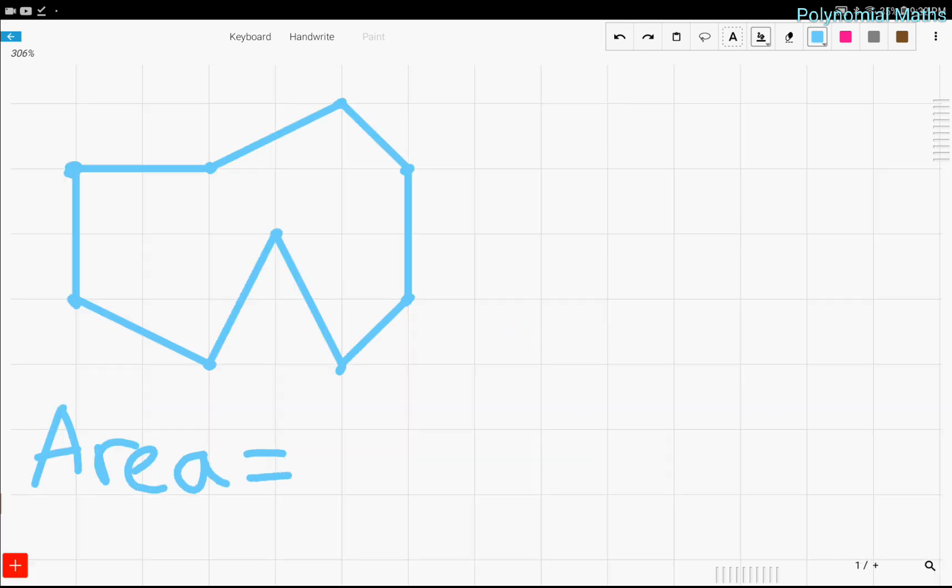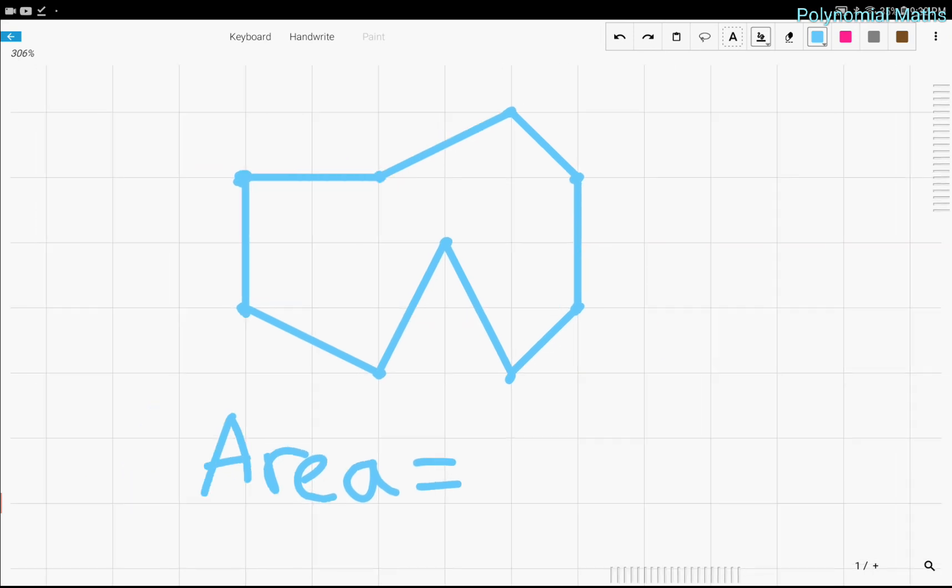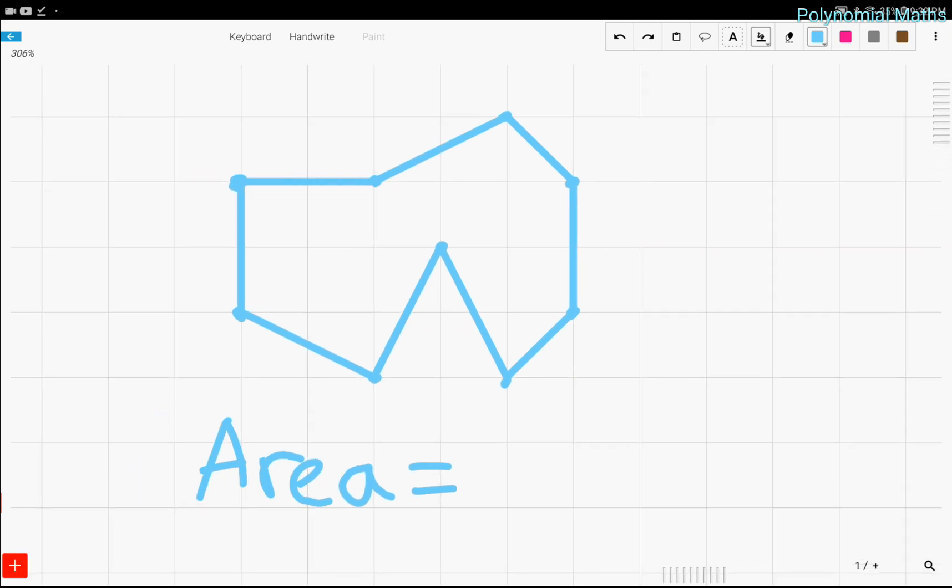For example, even triangles can be hard to find the area of. But Pick's Theorem can be used to solve this.